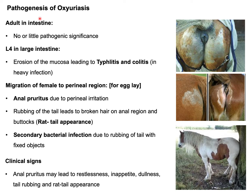Pathogenesis of Oxyurius equi infestation in horse and donkey: when adult parasites are located in the intestine, there is no or little pathogenic significance. However, when L4 is found in the large intestine, they have a large buccal capsule and can attach to the mucosa of the large intestine, leading to erosion of the mucosa. As a result, typhlitis and colitis can occur, and these two conditions are found in heavy infestation.